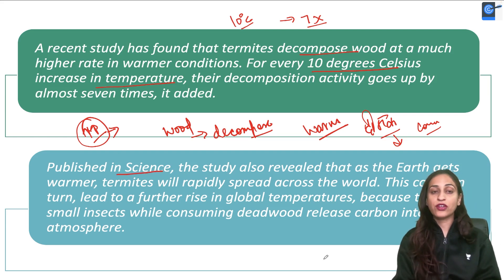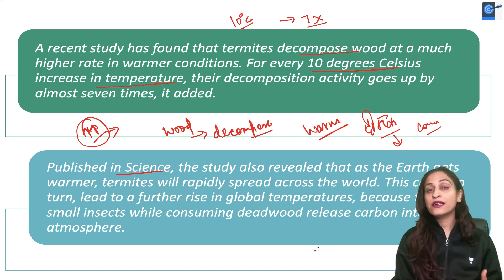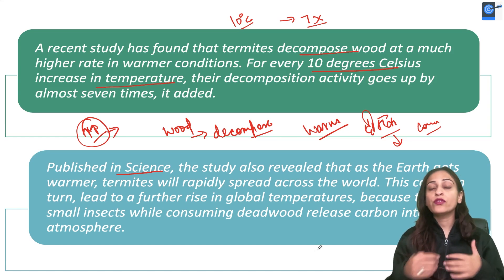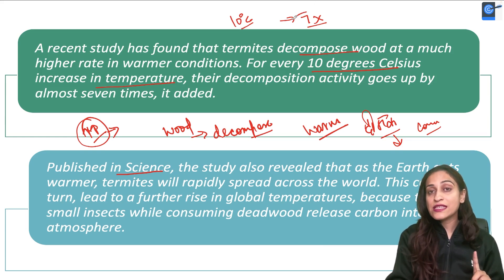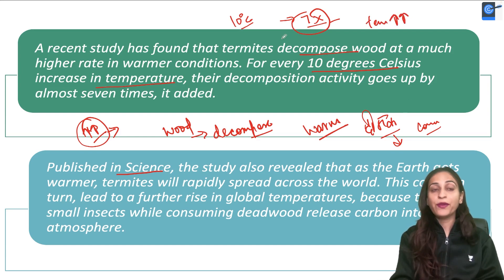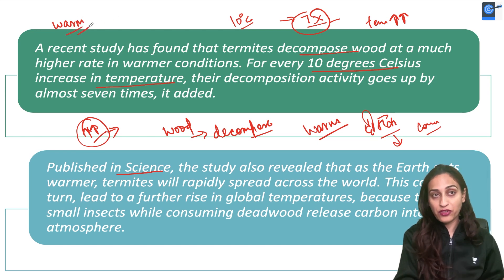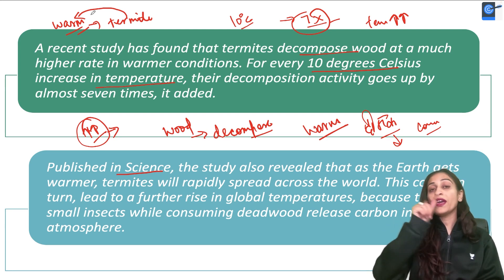This study is published in the journal Science. We know that the temperature of the earth is increasing — the earth is getting warmer. If the temperature of the earth is increasing, termites will spread in the world because where warm conditions exist, their survival rate is good and decomposition rate increases. As termite activity increases, global warming will increase further — so it becomes a vicious cycle.